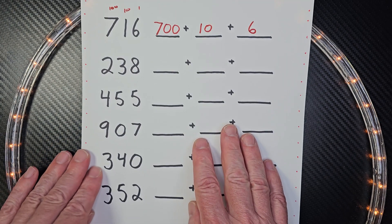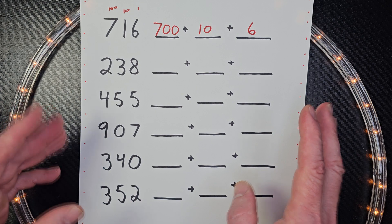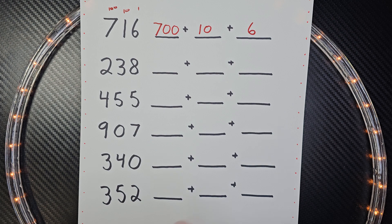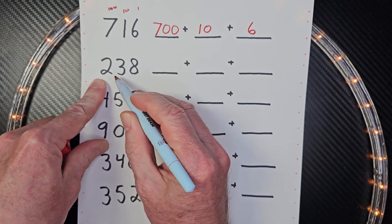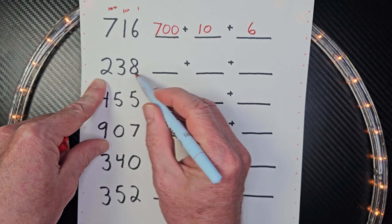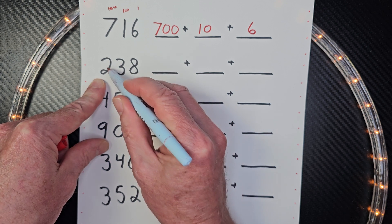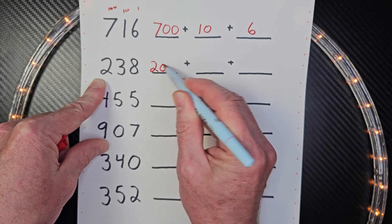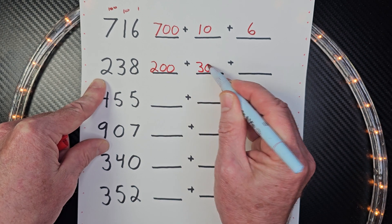Now here's a couple other problems right here. If you want to try these on your own, hit the pause button, and when you're ready to check it with me, hit the play button. All right, let's go ahead and start these problems here. Right away, a nice easy way to do this is just say the number. Two hundred thirty-eight. And say the number slowly. Two hundred thirty-eight. Remember, we start on the left side, so it's two hundred thirty-eight.